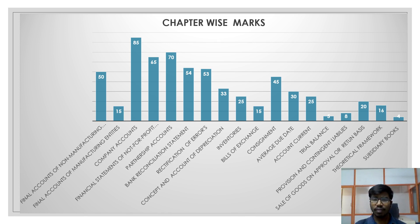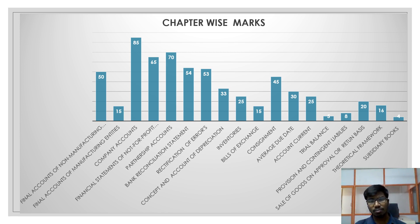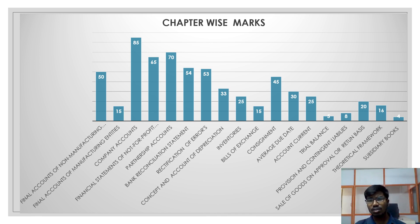Based on these weights, the highest importance is given first to company accounts, second to non-profit organization, third to final accounts (both manufacturing and non-manufacturing), and fourth to partnership. For Module 1, priority is given to BRS, rectification of errors, consignment, average due date, account current, and depreciation. These are the topics you need to be clear on in order to gain good marks in CA Foundation level Paper 1.